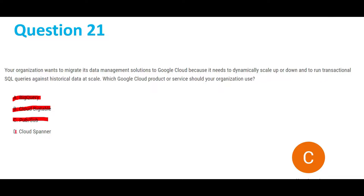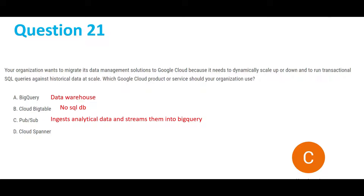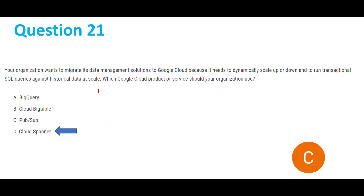We're only left with option D, so that will be our answer: Cloud Spanner. Here's a slide with all the reasons why A, B, and C are not the answers — please go through the reasons. So finally, option D, Cloud Spanner, is our answer for question 21.